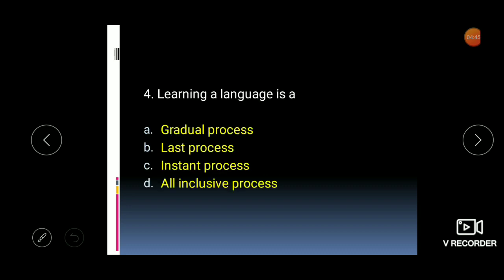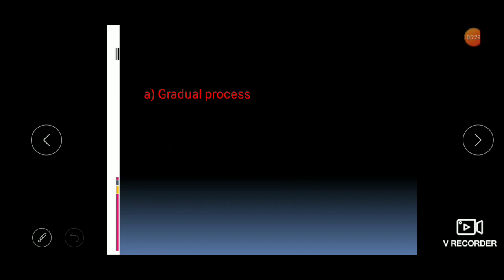Next MCQ: learning a language is — a gradual process, last process, instant process, or all-inclusive process? Can we learn a language instantly? No. Is there an end to learning? No, it is continuous. Gradual means a slow, continuous process. So the answer is gradual process.